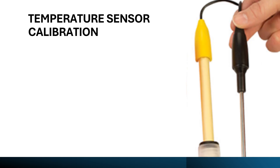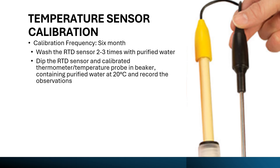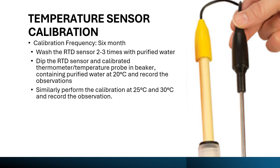Now we will discuss temperature sensor calibration. The calibration frequency for the temperature sensor should be every six months. For temperature sensor calibration, first wash the RTD sensor two to three times with purified water. Then dip the sensor and a calibrated thermometer or temperature probe into a beaker containing purified water at 20 degrees C. You need both the built-in temperature sensor of the conductivity meter and an external calibrated thermometer placed in the same beaker.